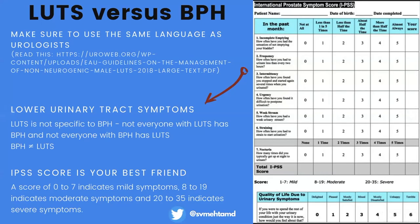It's important to talk to urologists and understand their language. We are not trained in lower urinary tract symptoms or BPH during residency and fellowship. If you tell a urologist you're treating BPH, they'll look at you funny. But if you say you're treating lower urinary tract symptoms secondary to bladder outlet obstruction, they'll say you're speaking their language. Remember: LUTS are not specific to BPH, and not everybody with BPH has LUTS. The IPSS score is your best friend — every single clinic patient should fill it out before you see them, as it saves time and quantifies symptoms the same way any urologist would.